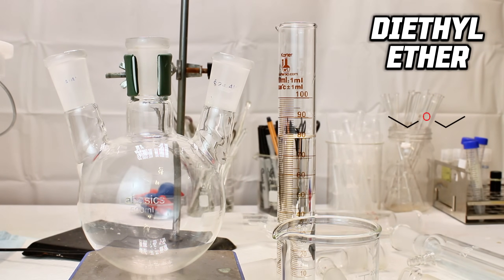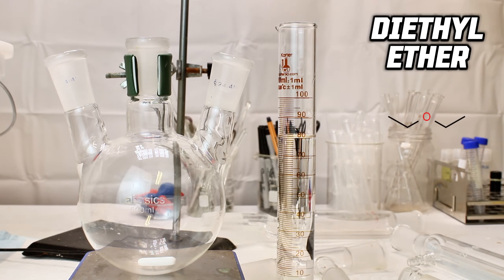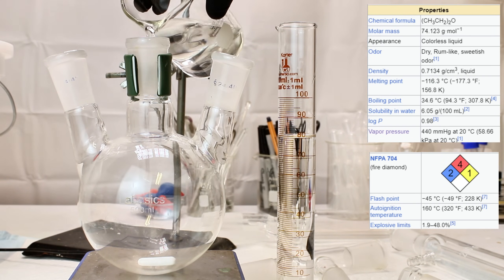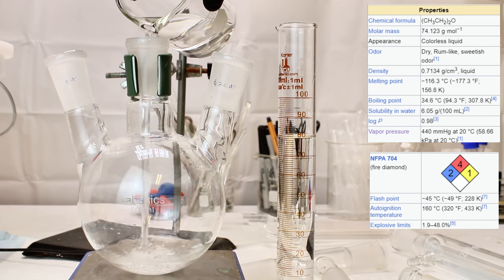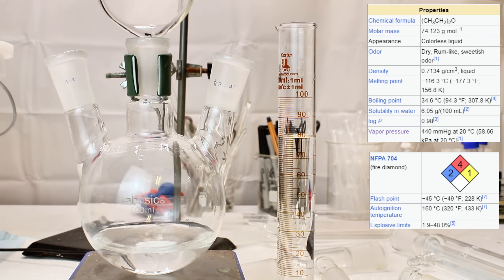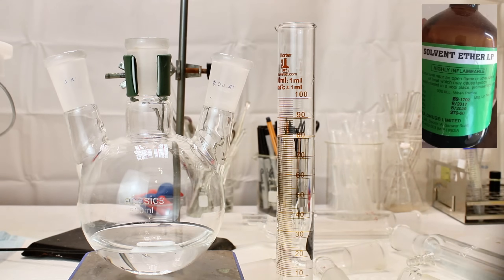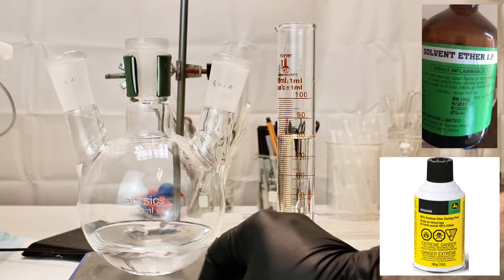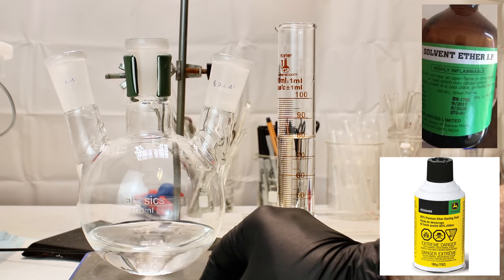One of the few chemicals I regularly make rather than buy at the store or online is diethyl ether, which is more commonly just referred to as ether. Ether is an extremely volatile, dangerously flammable organic liquid that is often used as a laboratory solvent or as a starting fluid in some engines, and it's nearly impossible to buy, at least where I live.